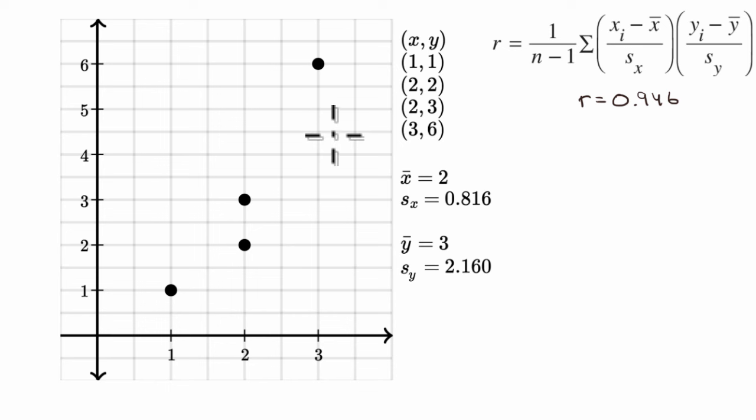In previous videos, we took this bivariate data and calculated the correlation coefficient. And just as a bit of a review, we have the formula here, and it looks a bit intimidating, but in that video we saw all it is, is an average of the product of the z-scores for each of those pairs.